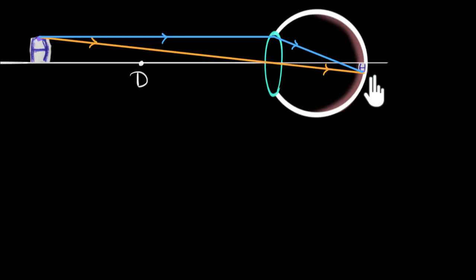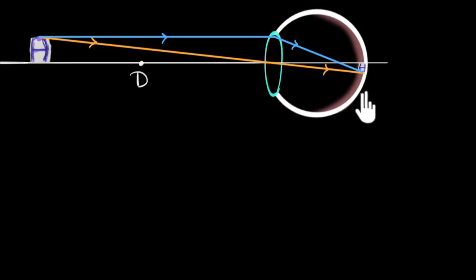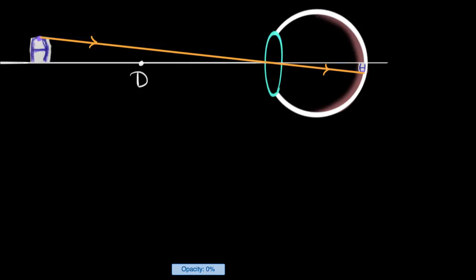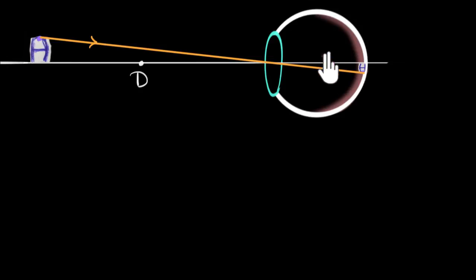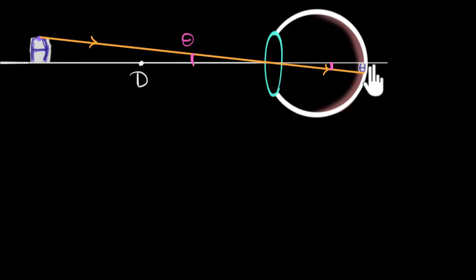Since we want magnification, we should try to figure out how to make the image height in the retina bigger. What does the image height depend on? If we concentrate on the yellow ray, we can see that the height of this image really depends on this angle theta. If theta increases, the image height increases. So to increase the image size inside our retina, we have to somehow increase this angle theta.